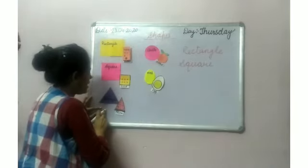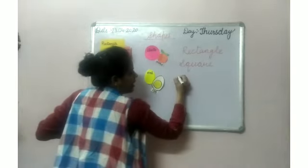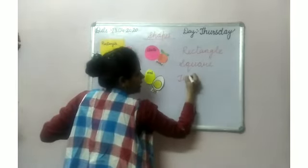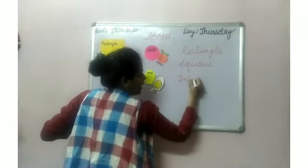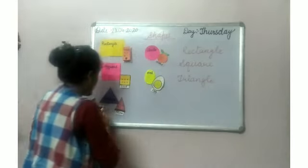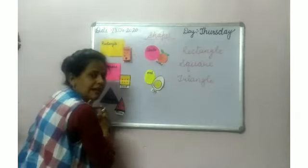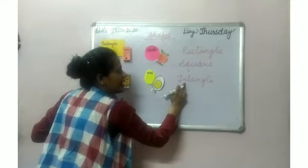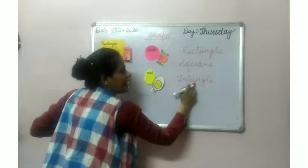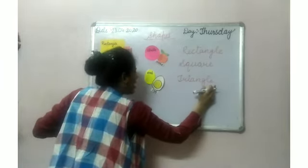Next is triangle. T-R-I-A-N-G-L-E. Next is triangle. Repeat with me: T-R-I-A-N-G-L-E.